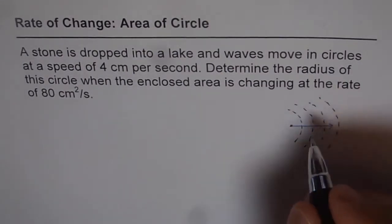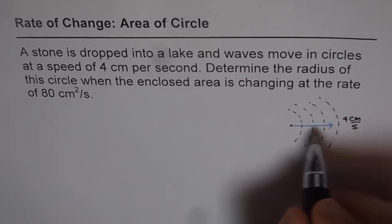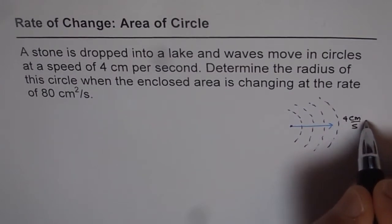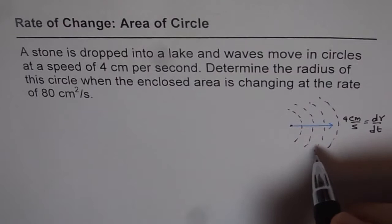The speed with which it is moving is 4 centimeters per second. This is change in radius, so we can write 4 centimeters per second is actually rate of change of radius with respect to time, dr/dt. The distance increases from the center where the stone was dropped at this rate.